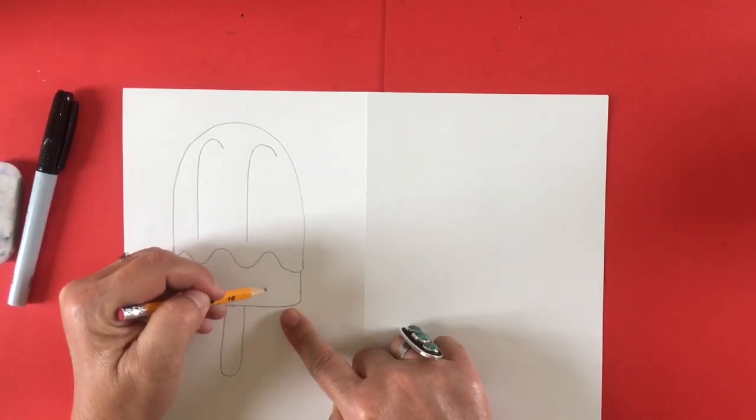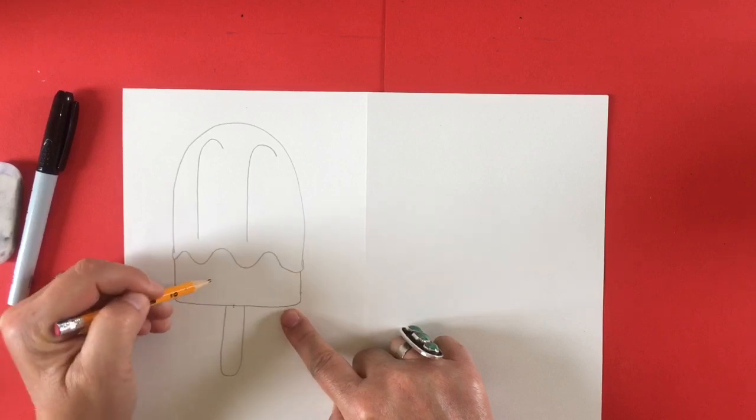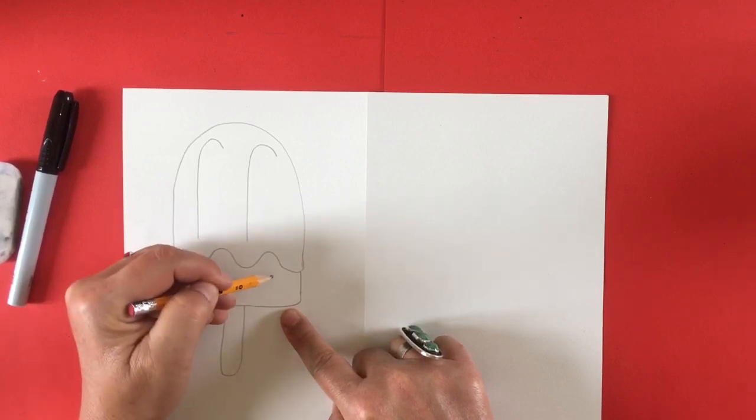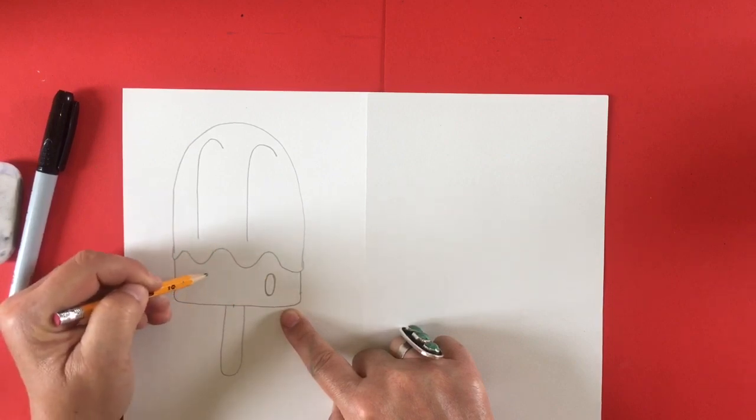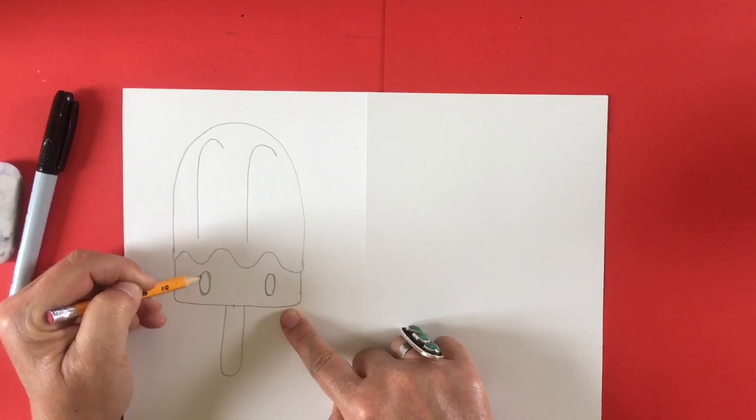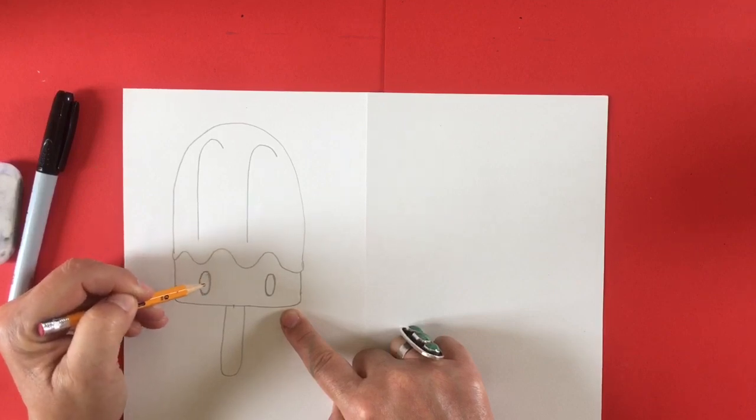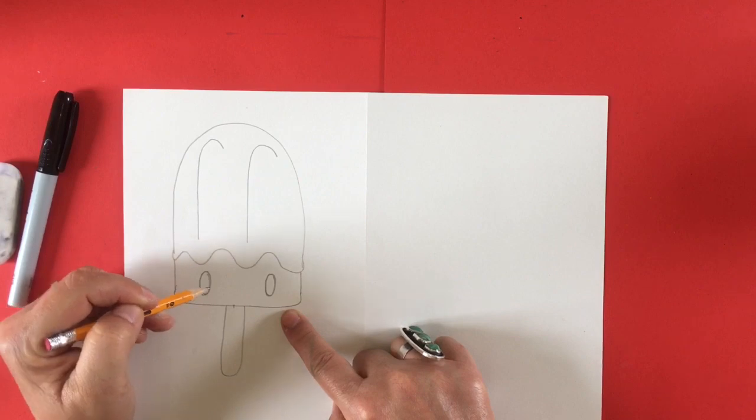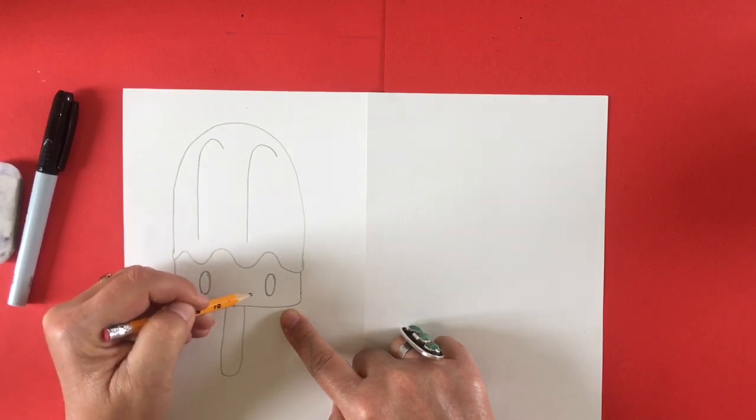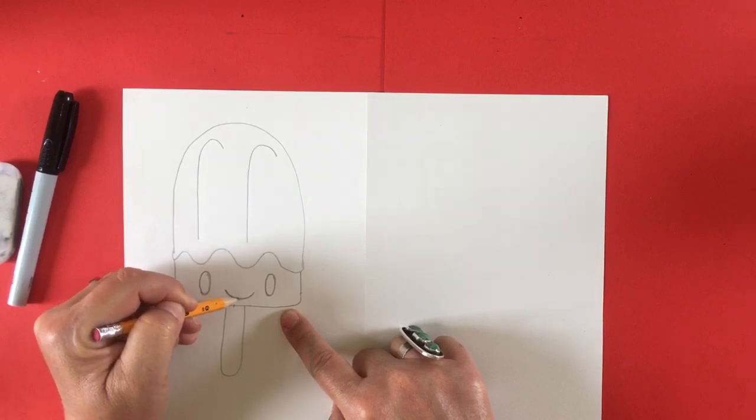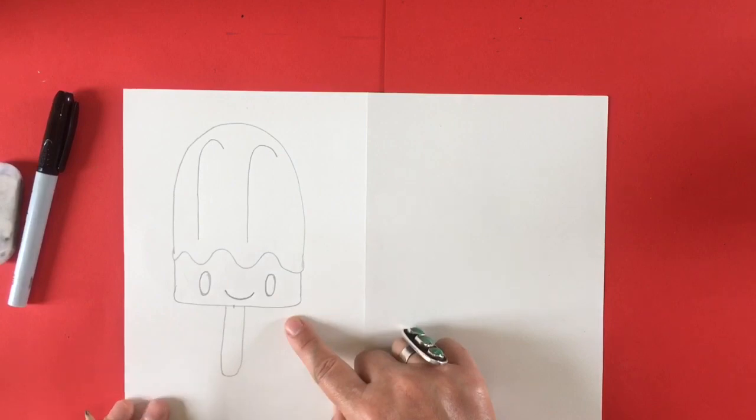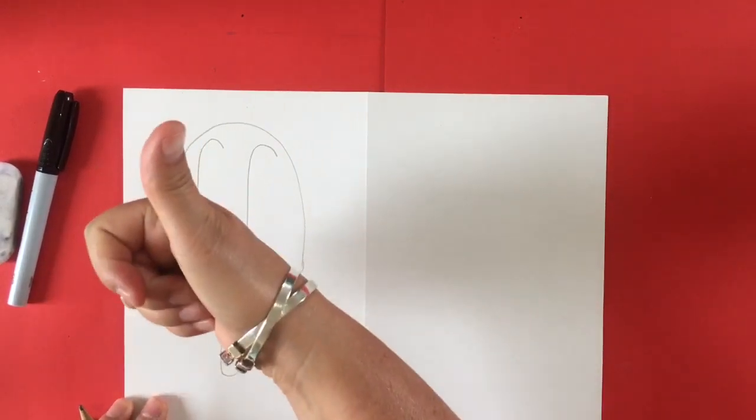Now let's give our popsicle a little happy face. I am going to draw some oval eyes that are symmetrical meaning equal and the same on either side of that lower section of my popsicle. You can make whatever eyes you want and use your creative side. Now it's time to give your popsicle a little smile and that's just a line that isn't straight, kind of curved.